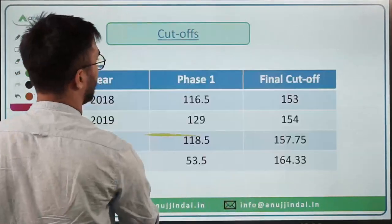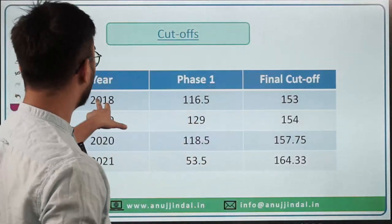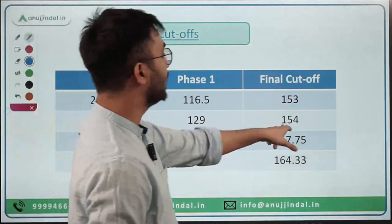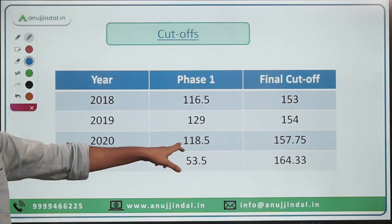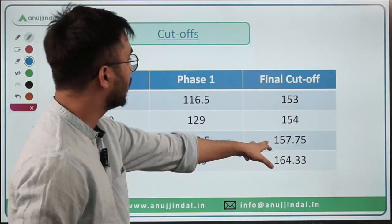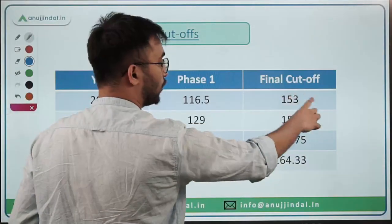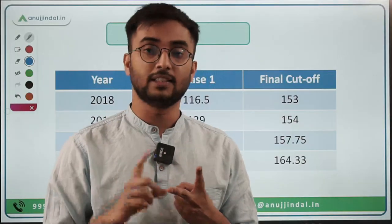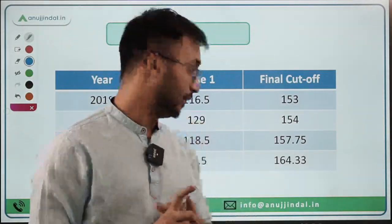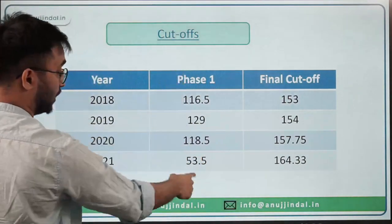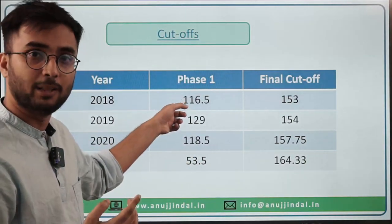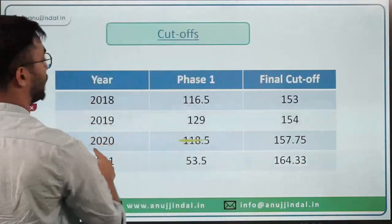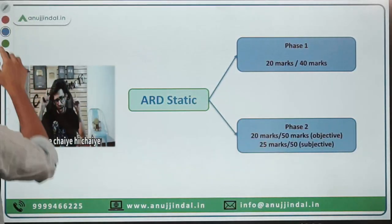Here are the last four years' cut-offs. In 2018, Phase 1 cut-off was 116 and final was 153. In 2019, Phase 1 was 129 and final was 154. In 2020, Phase 1 was 118 and final was 157. In 2021, the cut-off was 53.5 out of 100 merit marks from ARD, ESI, and General Awareness, and the final cut-off was 164. Seats have decreased while cut-offs are increasing, making ESI and ARD very important.